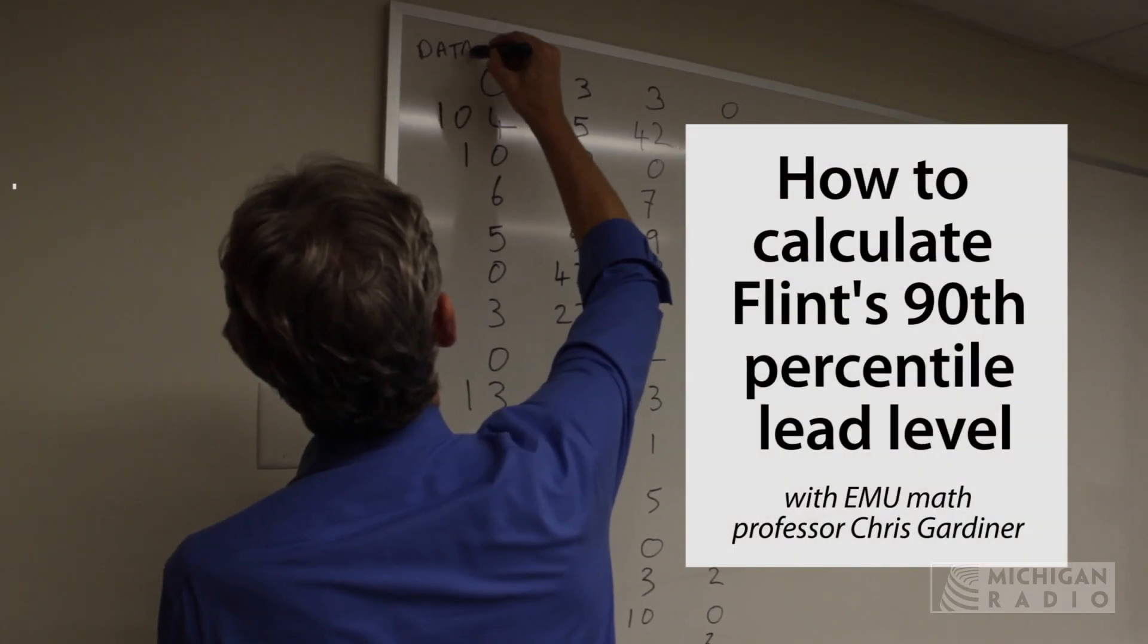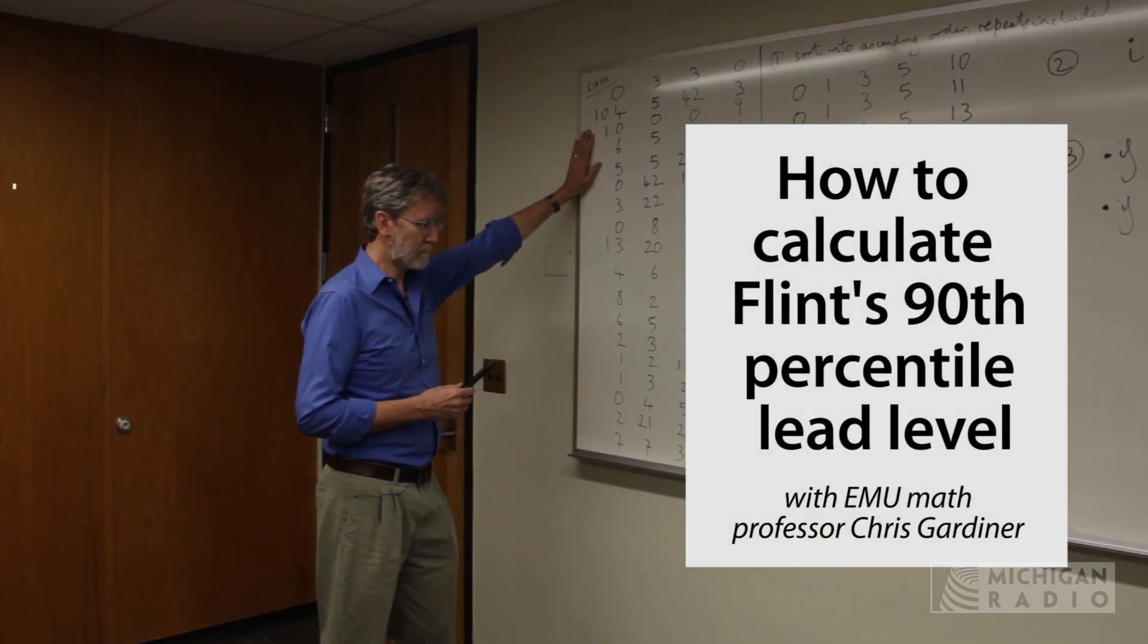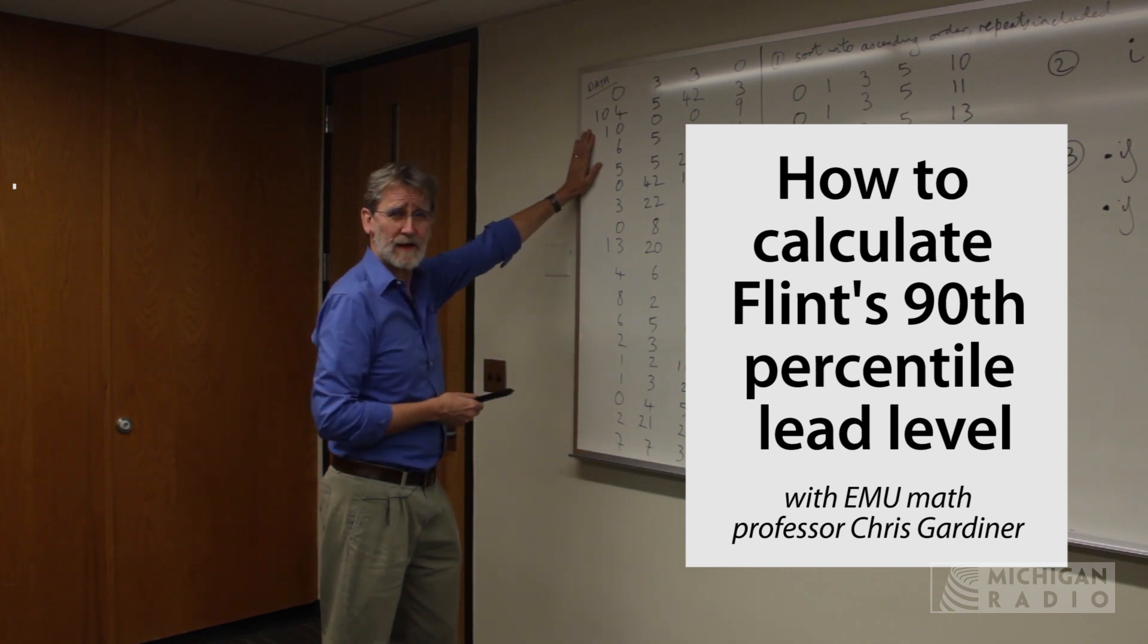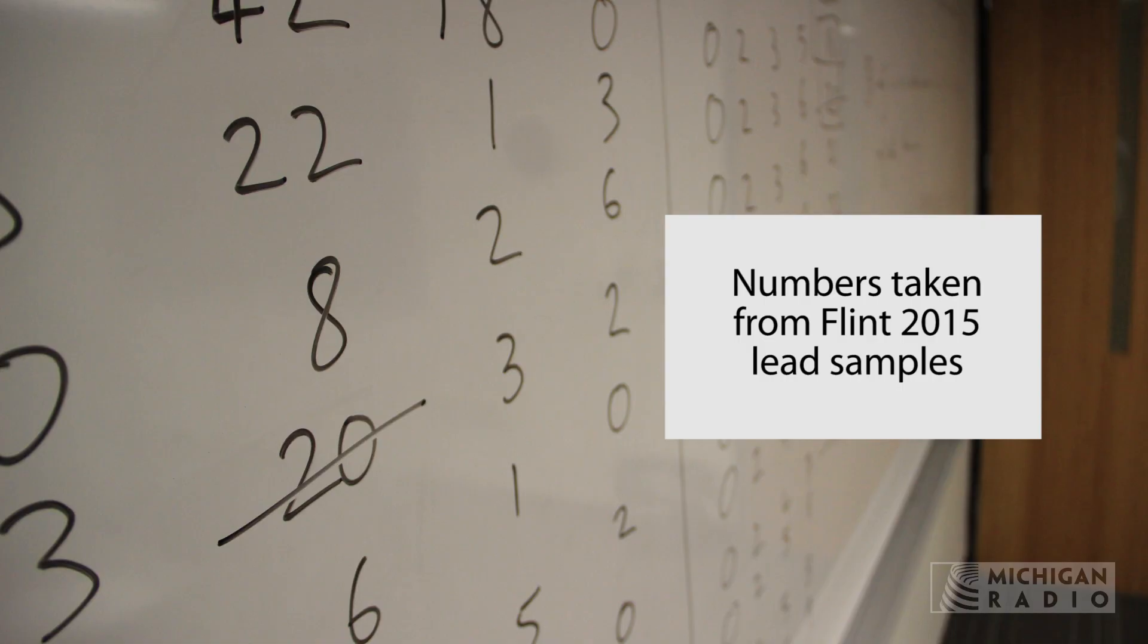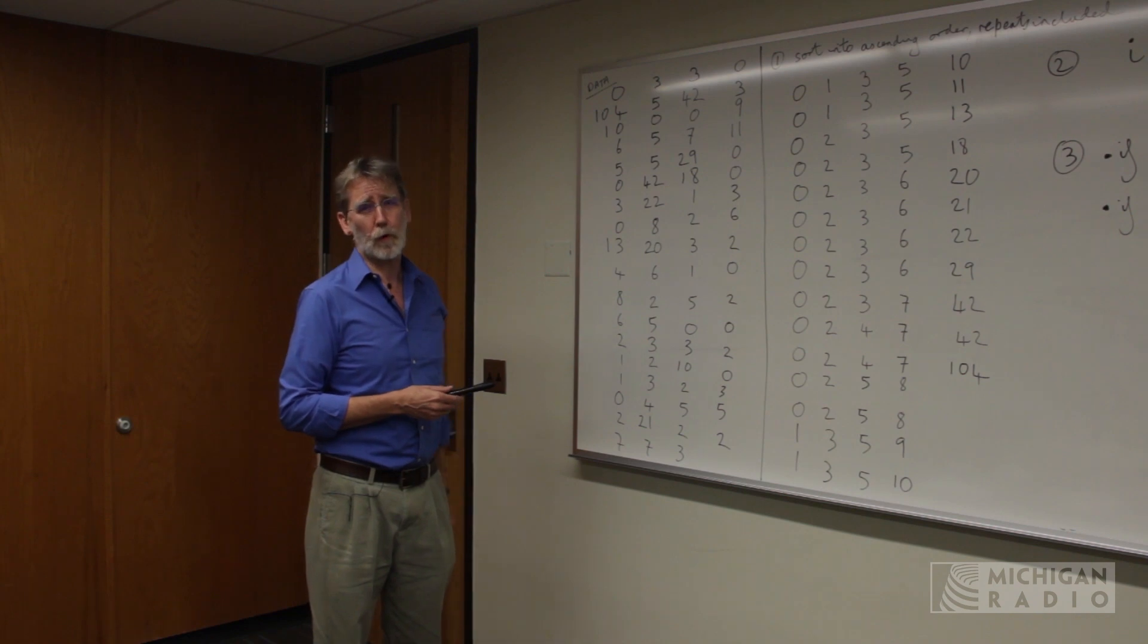So here we have the original set of data. There are a total of 71 data points here, ranging from 0 to 104, as it turns out, and you see it's in some kind of a totally random order.